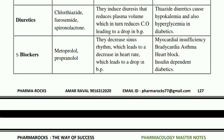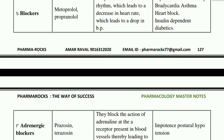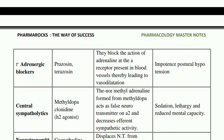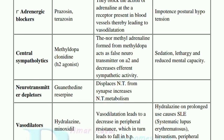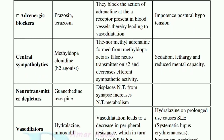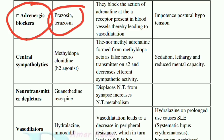Next are the alpha adrenergic blockers, which include prazosin and terazosin. They block the action of adrenaline at the receptors present in blood vessels, thereby leading to vasodilation.